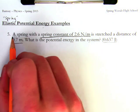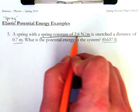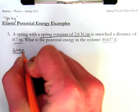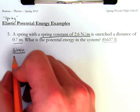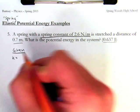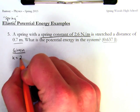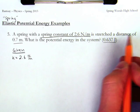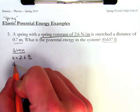A spring with a spring constant of 2.6 newtons per meter. So I'm given my spring constant of k equals 2.6 newtons per meter, and a distance of 0.7 meters.